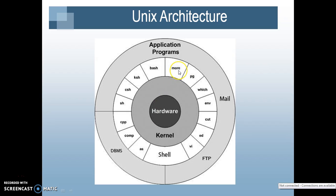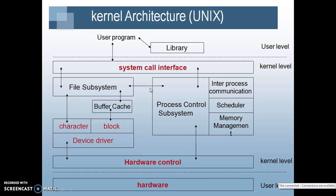We need to use kernel shell programming if we want to give commands to the kernel. As shown in the diagram, there are various building blocks for the kernel architecture of Unix. The user program can communicate to the kernel level subsystem or building blocks using system calls. The major building blocks are file subsystem, process control subsystem, and hardware control.